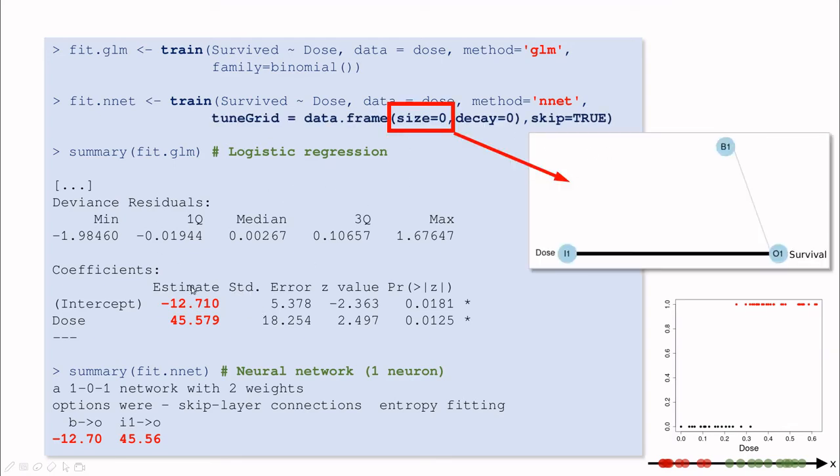So mathematically, we are using the same function, and computationally, this is the way in which we call caret. So size zero means that, not that we don't have neurons, it means that we only have one neuron at the end. It is the survival.